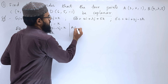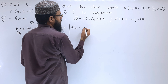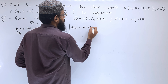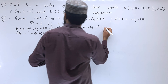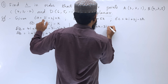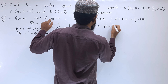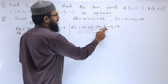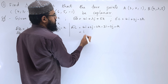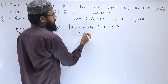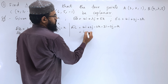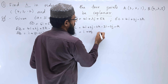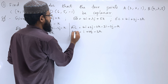Next, we need to find AC. So AC = OC - OA = (4i + 2j - 2k) - (3i + 2j + k), so 4i - 3i = i, 2j - 2j = 0, and -2k - k = -3k. So AC = i + 0j - 3k.